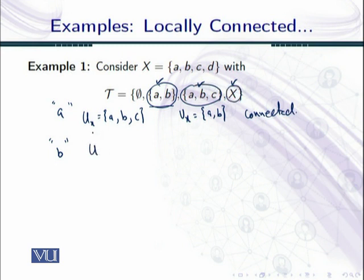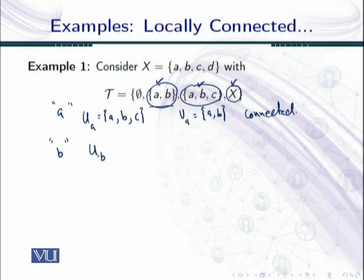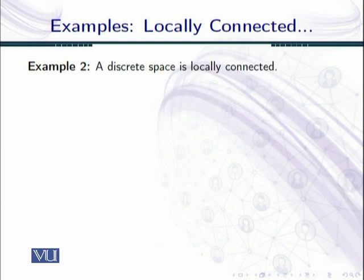I should write here U_a and V_a since I had taken them corresponding to a. Corresponding to b, these three choices are already checked — corresponding to each open set containing a or b, we can find an open connected subset that is contained in it and contains the point. So this space x is locally connected at each of its points, meaning x is locally connected.